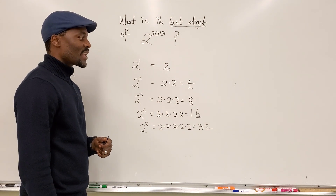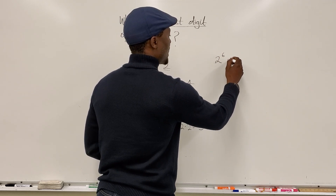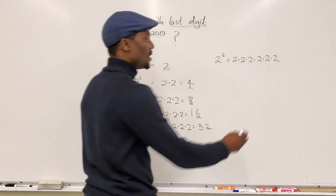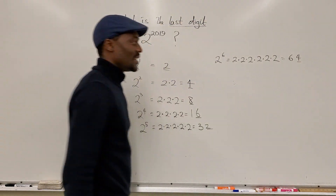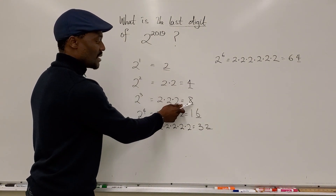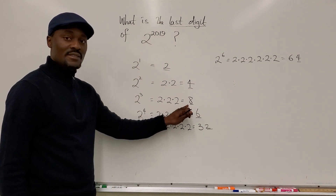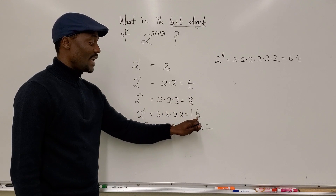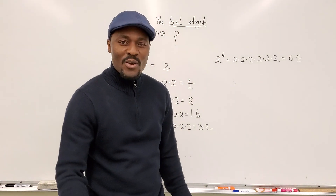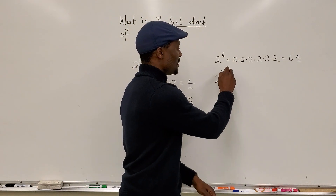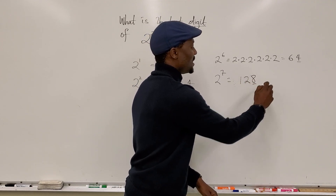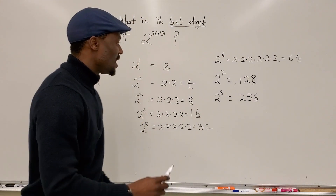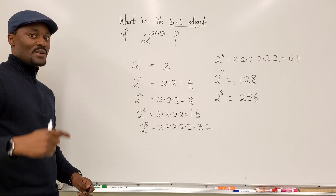Let's see if we're right. 2 to the sixth power is 64, so the last digit is 4. We can predict the next last digit is going to be 8. And indeed, 2 to the seventh is 128 — last digit 8. And 2 to the eighth is 256 — last digit 6. So there is a cycle of 4 digits that keep repeating: 2, 4, 8, 6. Every cycle has 4 digits. That's the secret.